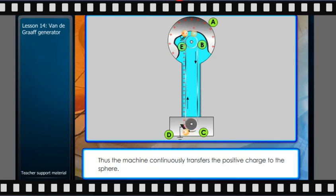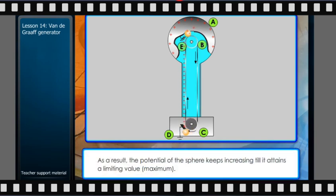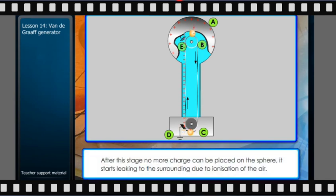Thus, the machine continuously transfers positive charge to the sphere. As a result, the potential of the sphere keeps increasing till it attains a limiting value or maximum. After this stage, no more charge can be placed on the sphere. It starts leaking to the surrounding due to ionization of the air.